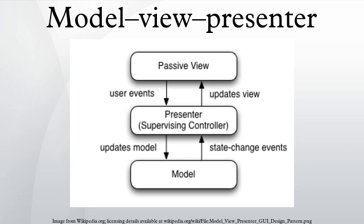After Taligent's demise in 1997, Andy Bauer and Blair McGlachan of Dolphin Smalltalk adapted the MVP pattern to form the basis for their Smalltalk user interface framework. In 2006, Microsoft began incorporating MVP into their documentation and examples for user interface programming in the .NET framework. The evolution and multiple variants of the MVP pattern, including the relationship of MVP to other design patterns such as MVC, is discussed in detail in articles by Martin Fowler and Derek Rear.